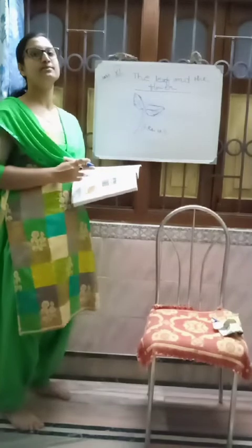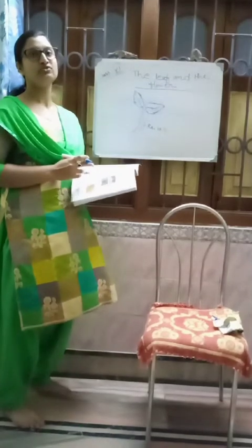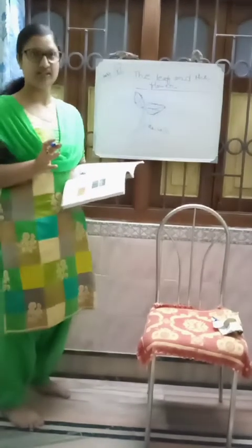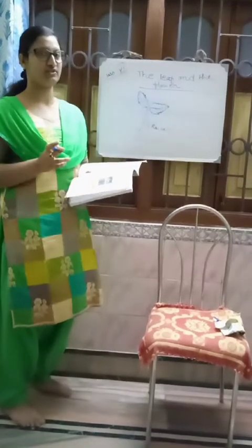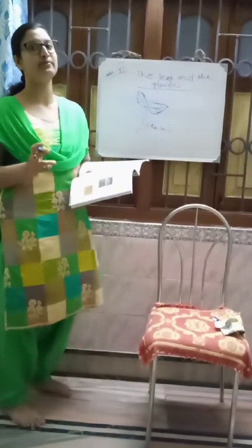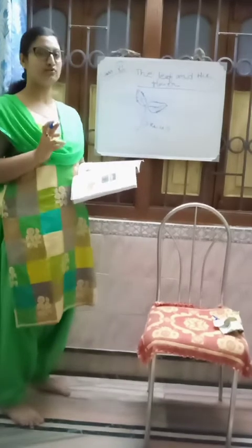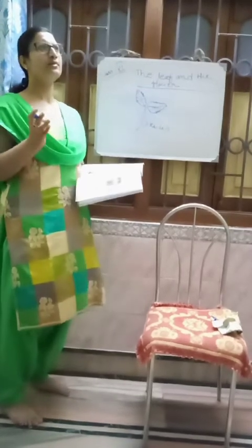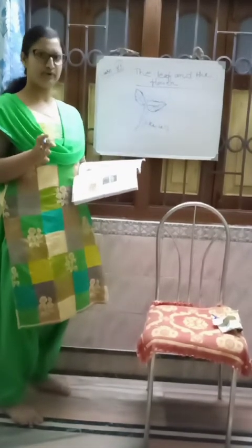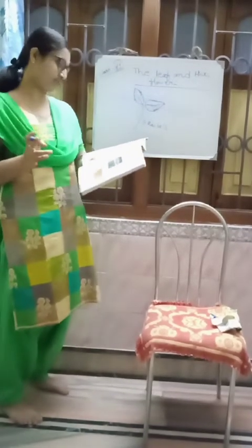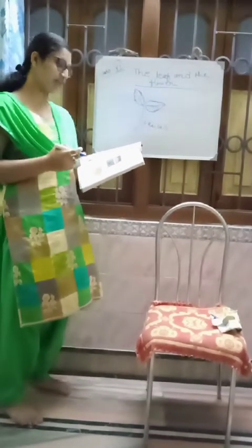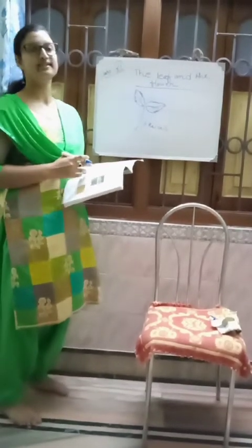What is the function of the leaf? The leaf helps to synthesize food. This process is called photosynthesis. Using photosynthesis, the leaf prepares food using water, carbon dioxide, and sunlight. Oxygen is given out by the plant during this process.